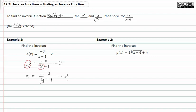Then, we solve for y. So, I'm going to multiply both sides of my equation by y minus one. But first, I need to add two to both sides. This will give me x plus two is equal to negative three over y minus one.